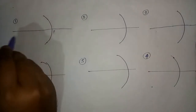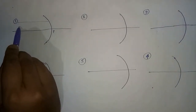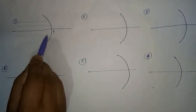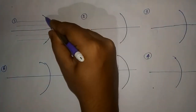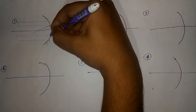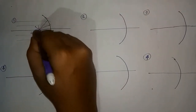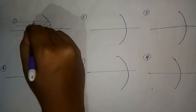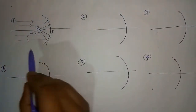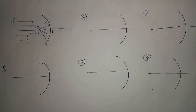Now let us draw some ray diagrams for image formation by a concave mirror. Case 1: when the object remains at infinity, the rays coming from the object will be parallel to the principal axis. After reflection, all rays will pass through the focus and intersect there. Thus, the image will form at the focus. The nature of the image will be real and inverted, and the size will be very small — point size.